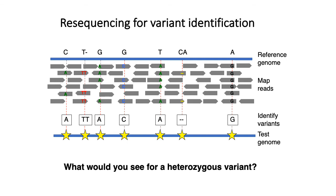An interesting question to consider: what would you expect to see for a heterozygous variant? For humans, the genome is diploid. If there's a specific SNP at a position and the individual is heterozygous for that SNP, what would the reads look like at that site? For a homozygous variant — for example, where the reference genome has an A but the test genome has a G — all reads mapping to that position indicate a G. But what would you expect if the variant were heterozygous?